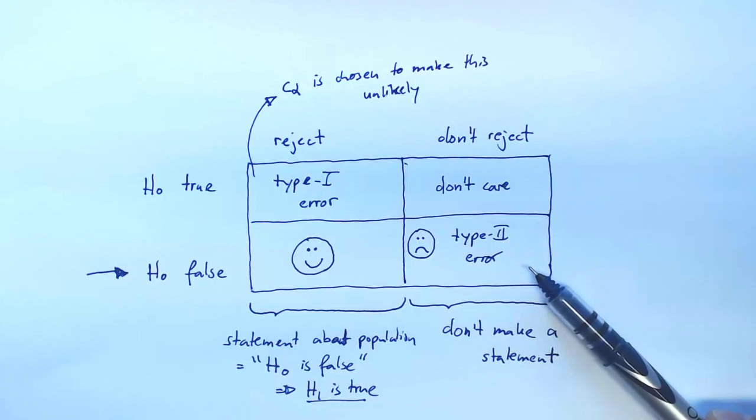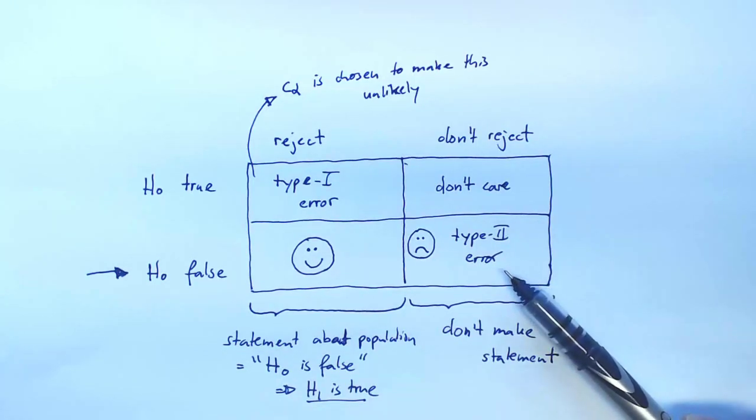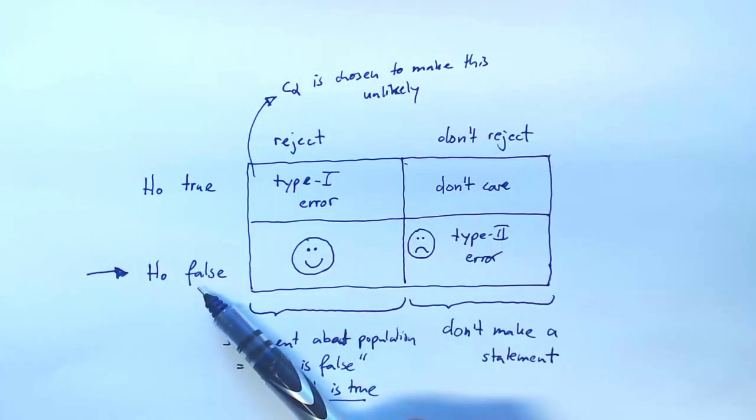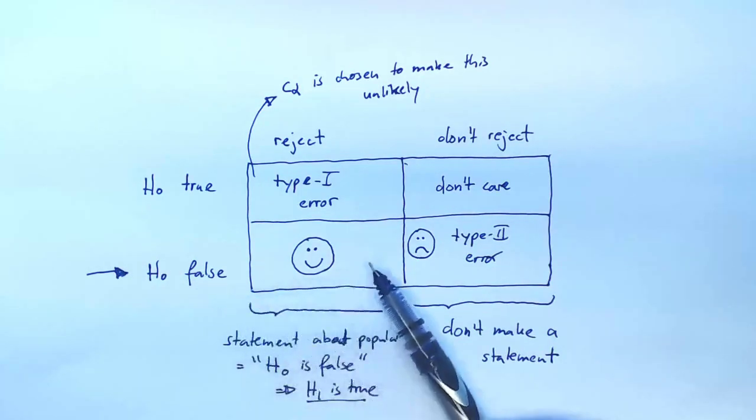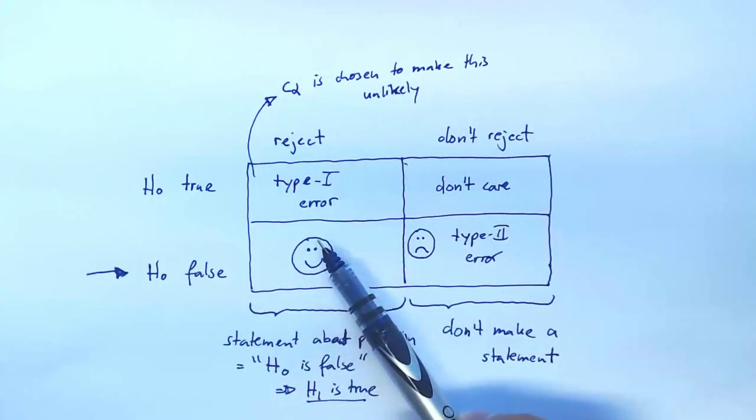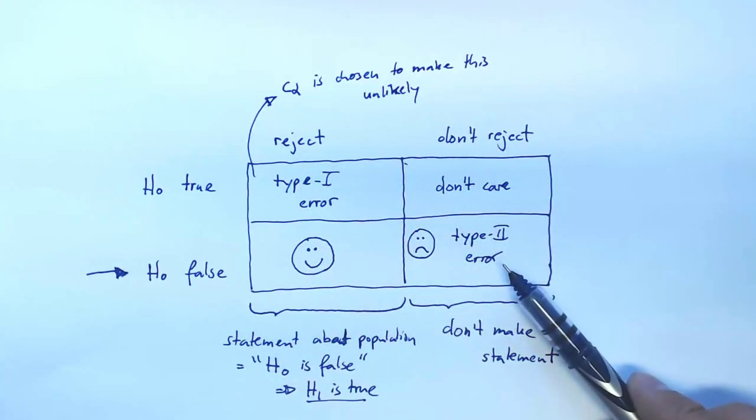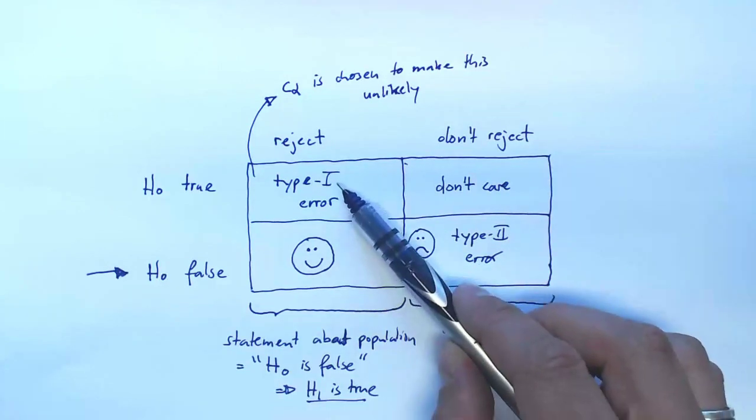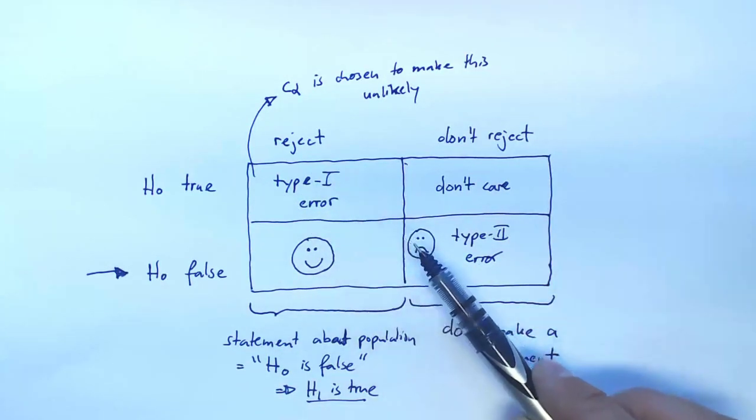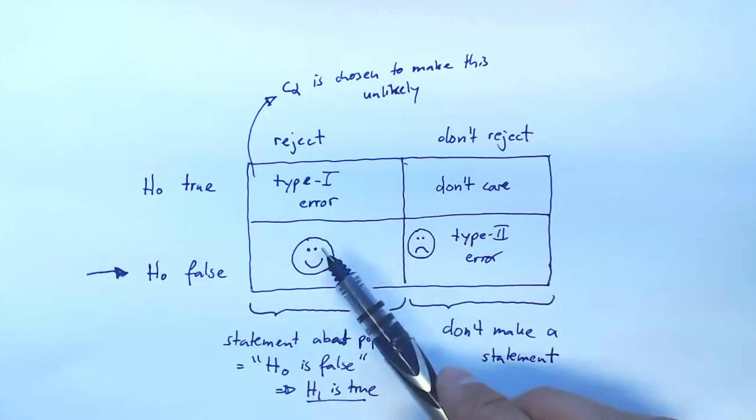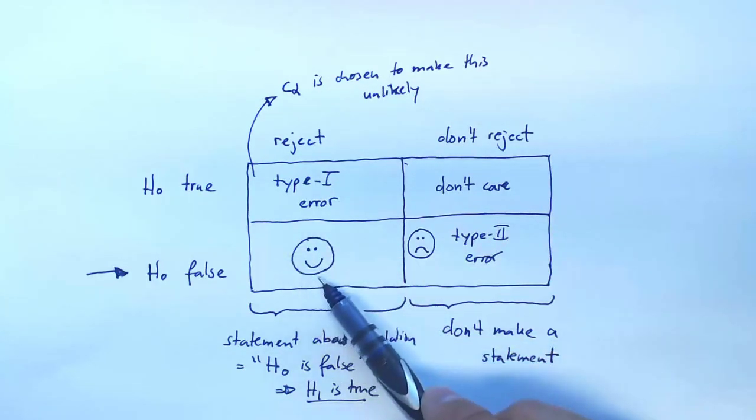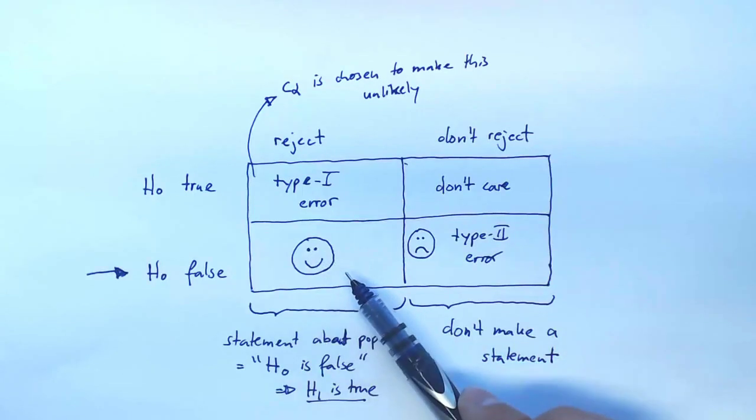Now the power of a test refers to its ability to detect situations where the null hypothesis is false. So its ability to be here rather than here. If there are two tests, let's call them A and B, that both have the same type one error, then if A is more often here in this scenario than test B, then we say test A is more powerful than test B.